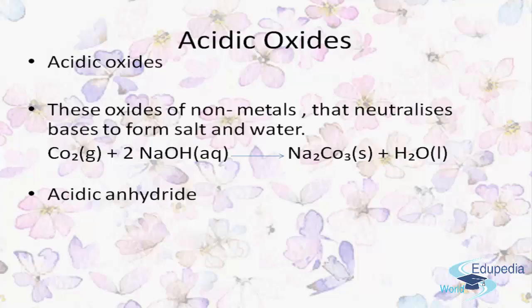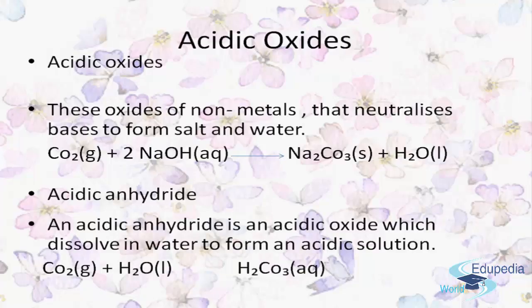Secondly, we have acidic anhydrides, which are acidic oxides that dissolve in water to form an acidic solution. So there are two types of acidic oxides: first, those which neutralize a base to form salt and water; and second, those which dissolve in water to form an acidic solution. For example, carbon dioxide and water combine to form carbonic acid.